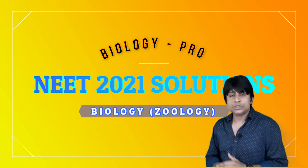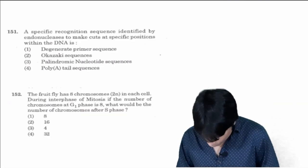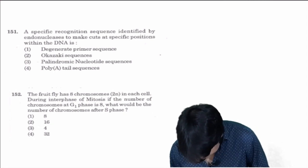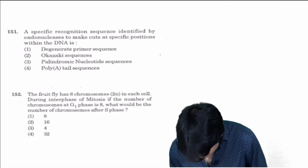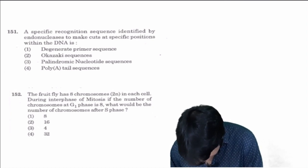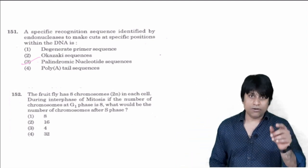Let us go with this. Here is the question. Question 151: A specific recognition sequence identified by endonuclease to make cuts at specific positions within the DNA is palindromic sequence. Always a restriction endonuclease identifies a specific palindromic sequence and cleaves the DNA fragments.